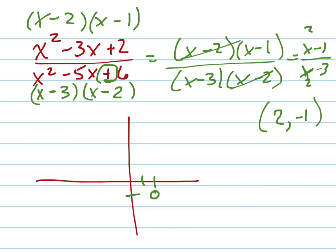And there's a vertical asymptote right there at 3. So there's a vertical asymptote. And the horizontal asymptote, since the degree of the top and bottom are the same, the vertical asymptote is at 1, the ratio of leading coefficients. And so you can see what's going to happen.